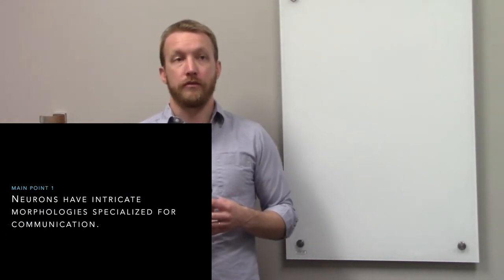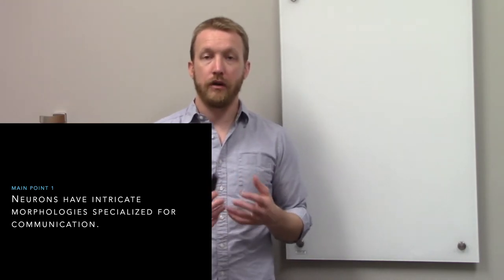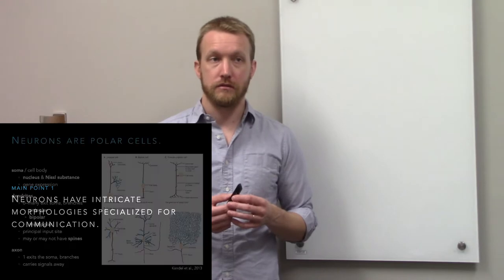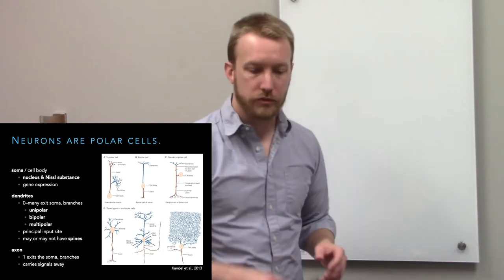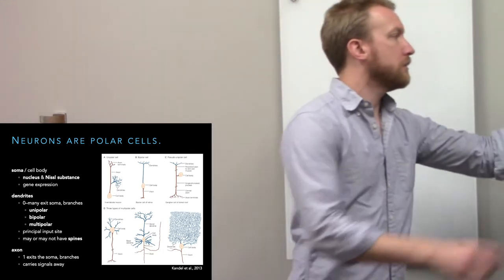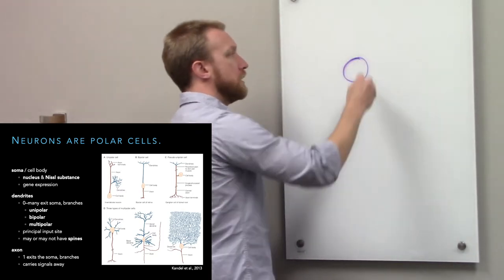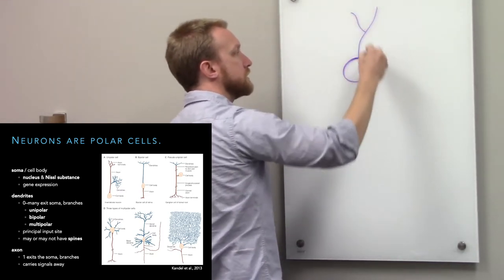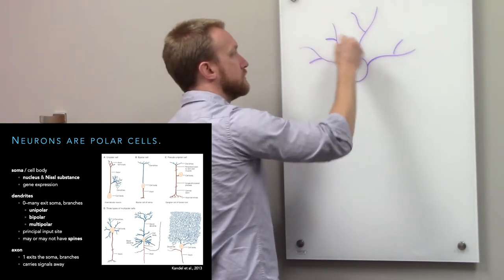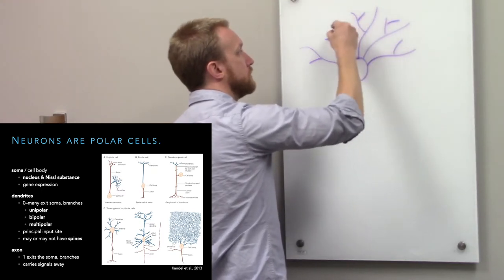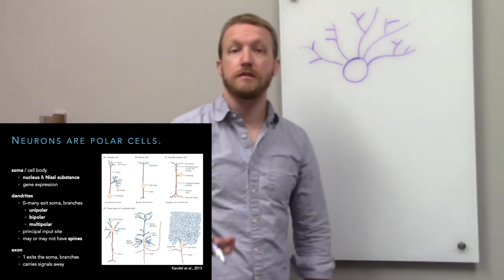Neurons have very complex morphologies that allow them to communicate effectively. When you think of a neuron, you probably think of a central cell body and then a whole bunch of extensions coming off of that. Collectively, we call these extensions neurites. They're branching — in some cases very extensively, and in other cases not so much.